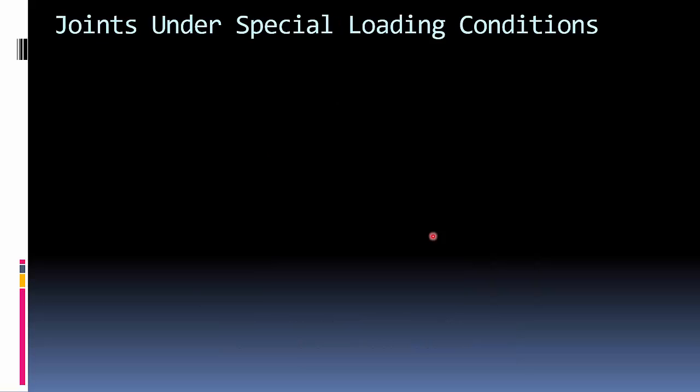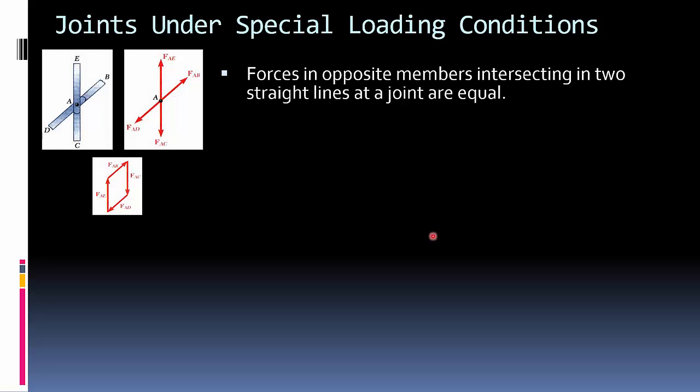Well, the other option that we're going to do is the method of sections. But in order to do that, we want to talk about a specific example, joints under special loading conditions, and this is to help us with the method of sections.